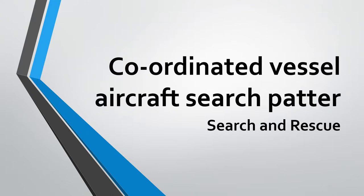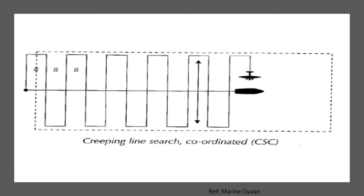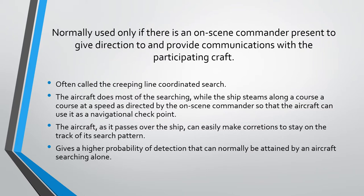Let's talk about the coordinated vessel-aircraft search pattern in a search and rescue operation. This pattern, also known as the creeping line coordinated search or CSC, shows the aircraft and the vessel carrying out a joint search exercise. The track spacing, denoted by the capital letter S, is kept constant. This type of search is normally used only if there is an on-scene commander present to give directions and provide communications with the participating aircraft.